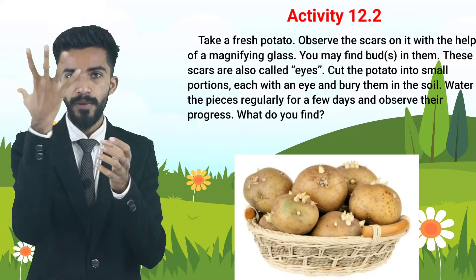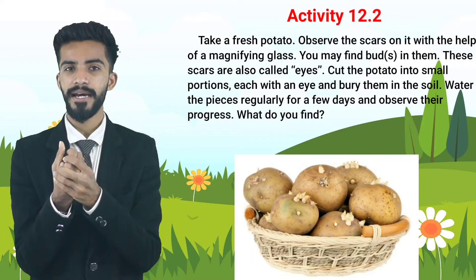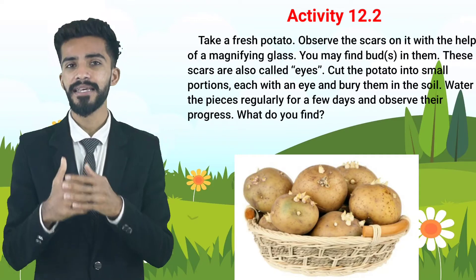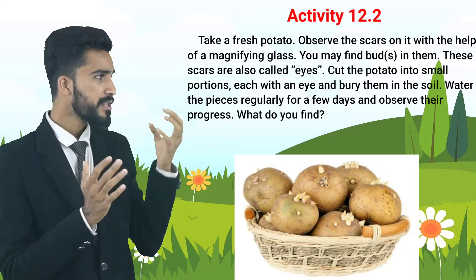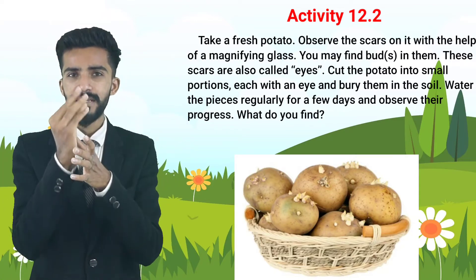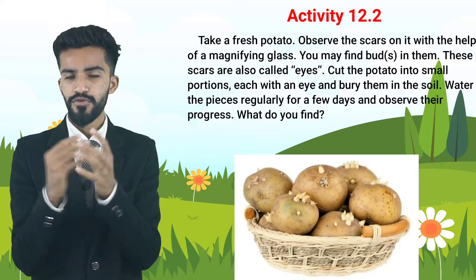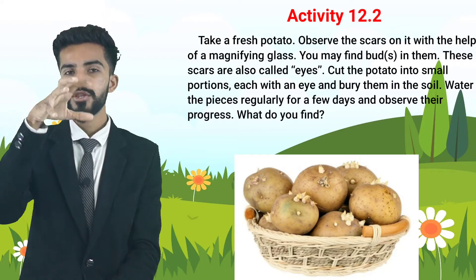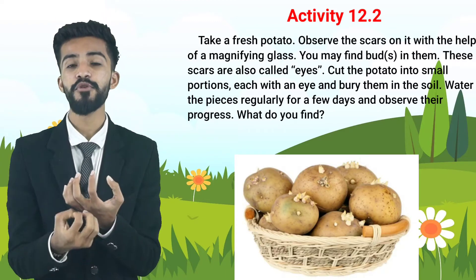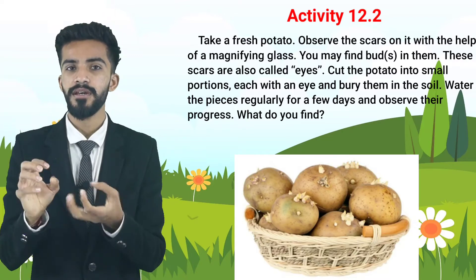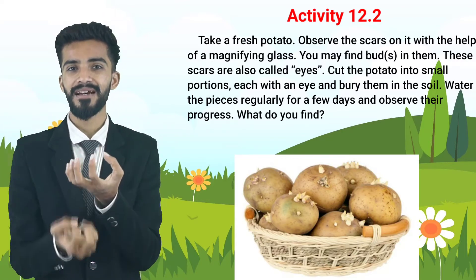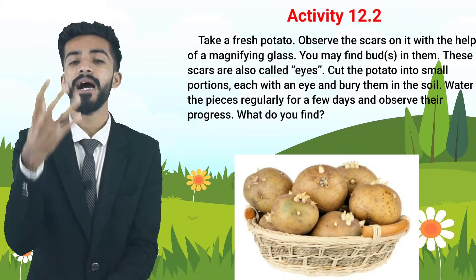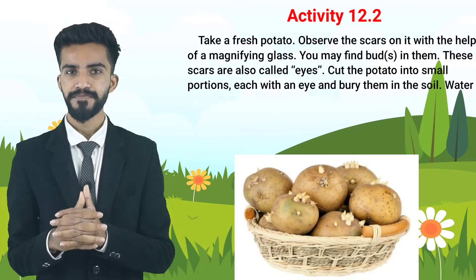Observe the growth every day. After some days you will see a small shoot coming out. As the plant grows bigger above ground, the potato forms underground. When the plant has grown sufficiently, pull it out and you will see the potatoes underground.